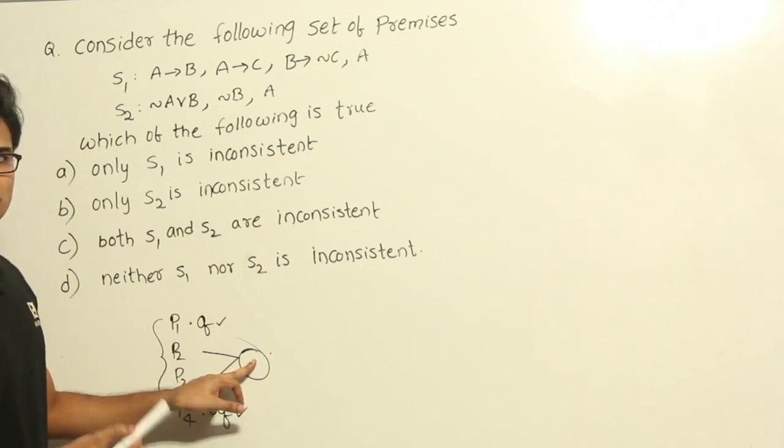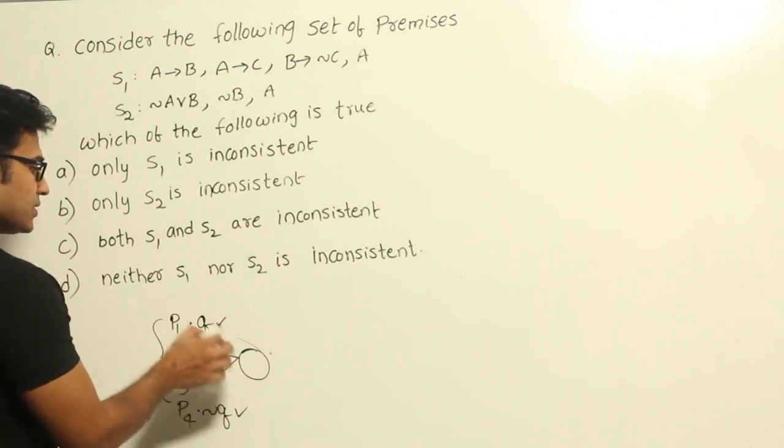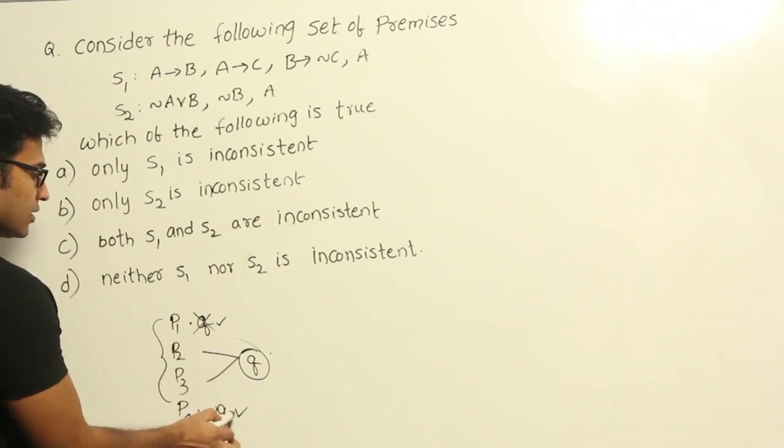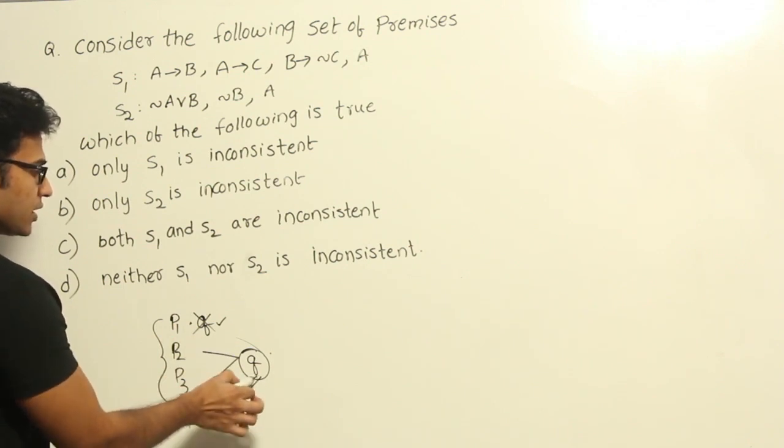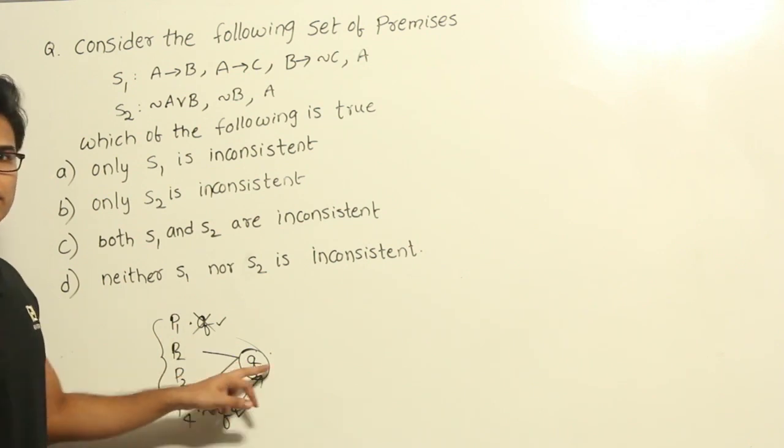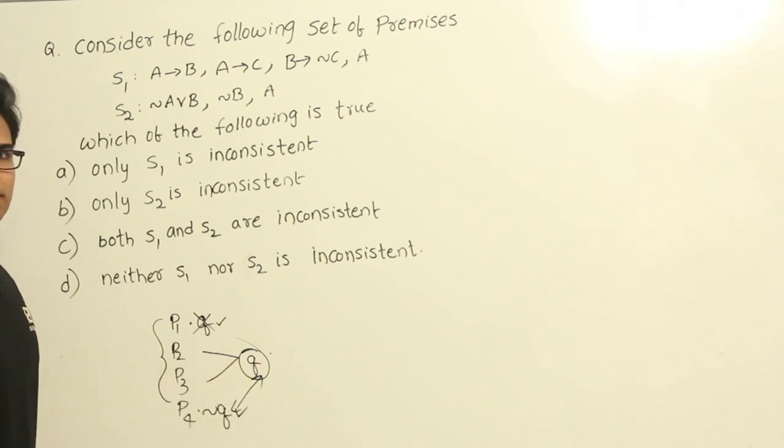Now from these premises when you get a conclusion using the rules of inference, let's say you got Q here. Q is not initially given but the negation Q is given. Now these two are not agreeing with each other, right? Then also you can say that it is inconsistent.